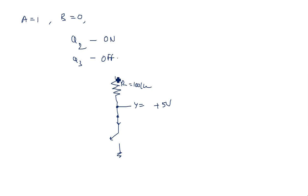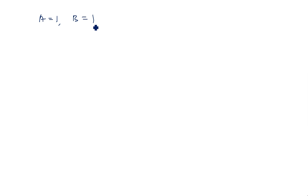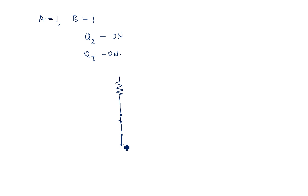The resistance is 100 kilo ohms. Until and unless there is a short circuit between the output and ground, the output stays at 0 volts only when shorted. Now for the last case: A equals 1 and B equals 1. That makes Q2 ON as well as Q3 ON. When both are ON, there exists a short circuit through both transistors Q2 and Q3, with R equal to 100 kilo ohms connected to plus VCC.